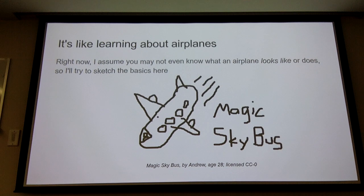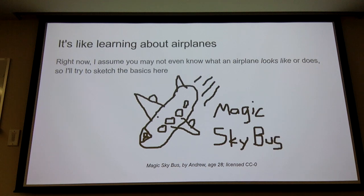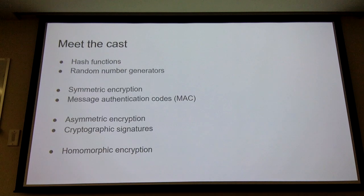I'm going to assume you don't even know what an airplane does, or what it looks like, or why you would want one. Cryptocurrency and blockchain is a very adjacent topic that uses these concepts, but is its own thing. We're going to talk about what the basics of cryptography look like.